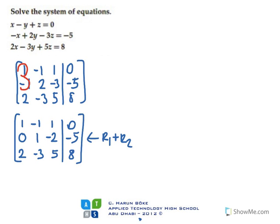Next, I have to multiply the first row by minus two so I will get zero here. So, minus two times one is minus two; minus two times minus one is two; minus two times one is minus two; and zero times minus two is zero.